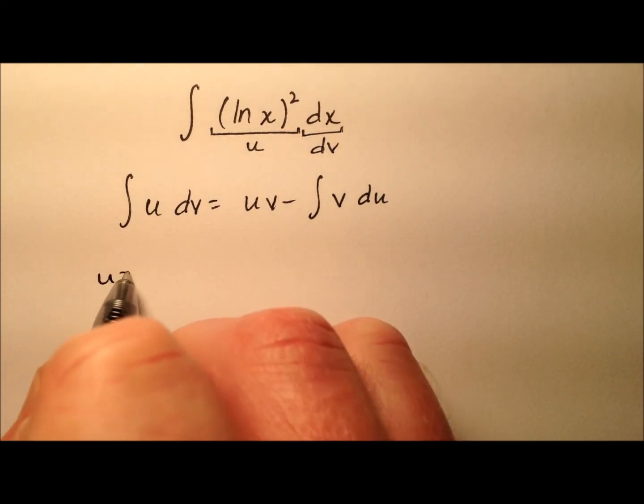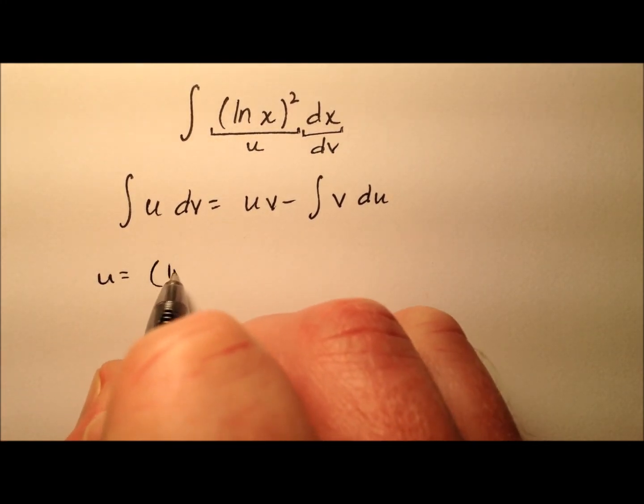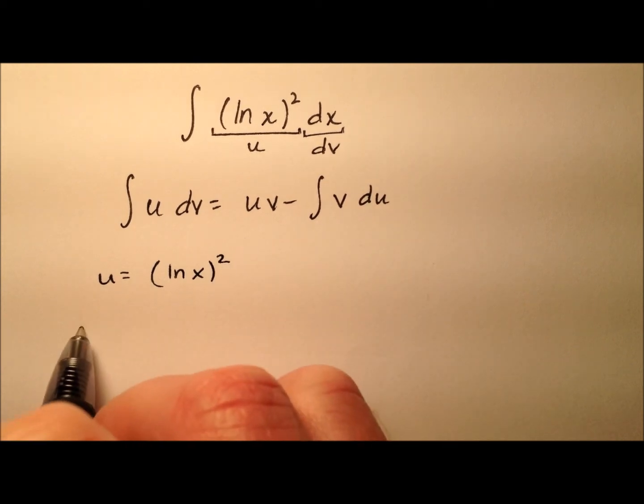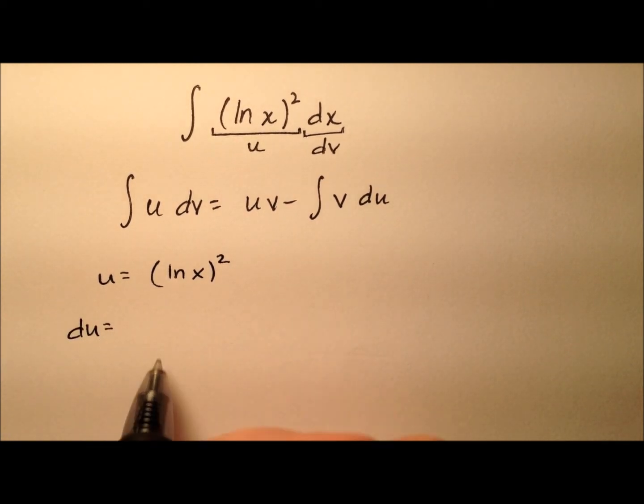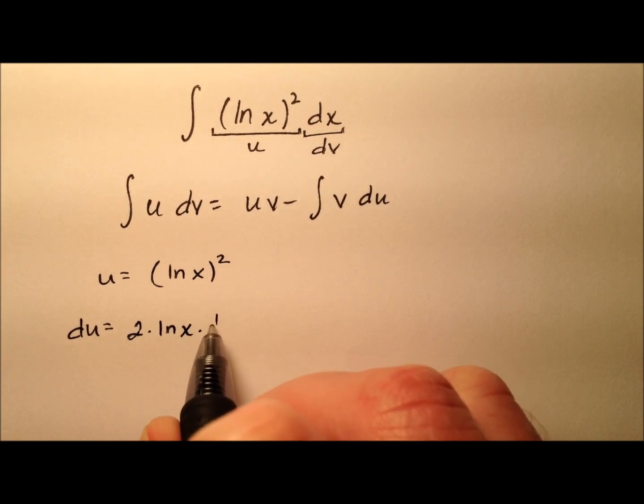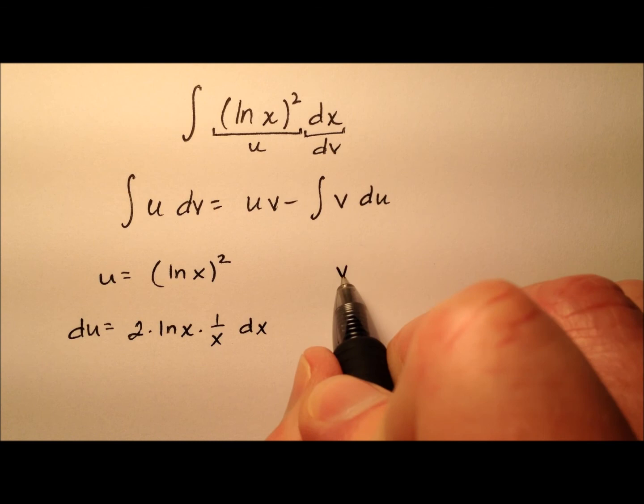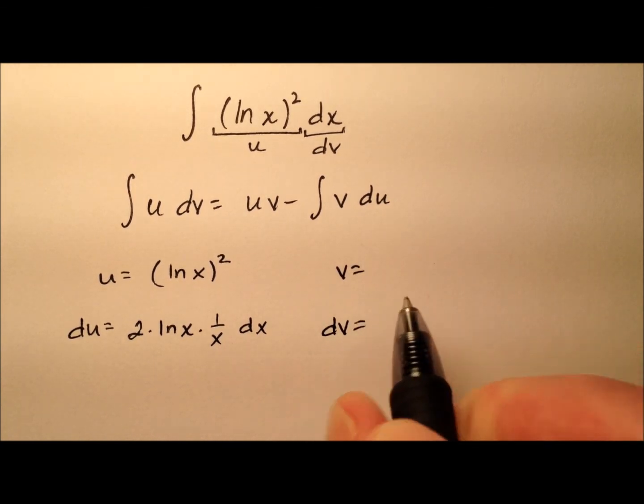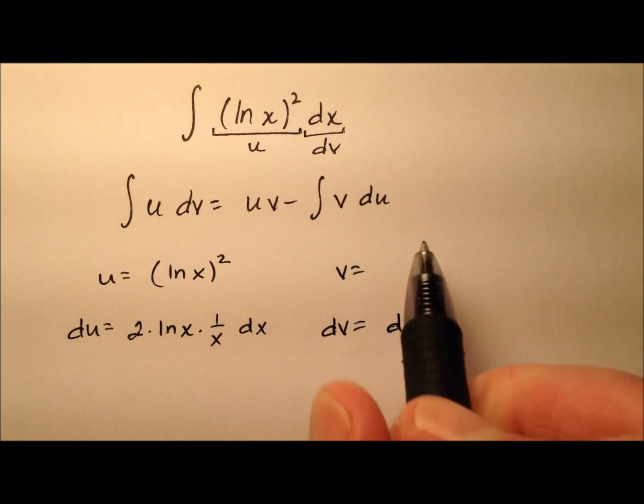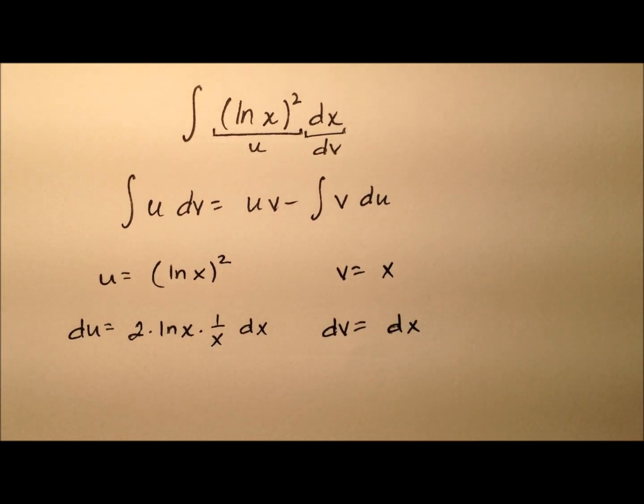So when I set everything up, u is going to be ln of x squared, which means du will be 2 times ln of x times that derivative, which is 1 over x, dx. So then we have v and dv. We said dv was just dx. So when we go backwards and integrate both sides, we get x.